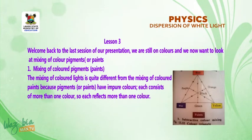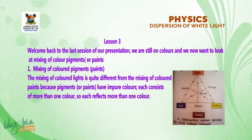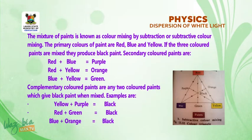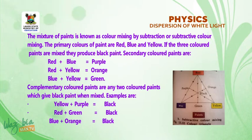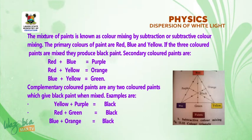Welcome back to the third session of our presentation. We are still on colors and we now want to look at mixing of colored pigments, that is, paints. The mixing of colored light is quite different from the mixing of colored paints because paints have impure colors — each consists of more than one color, so each reflects more than one color. The mixture of paints is known as color mixing by subtraction, or subtractive color mixing. The primary colors of paints are red, blue and yellow. If the three colored paints are mixed, they produce black paint.